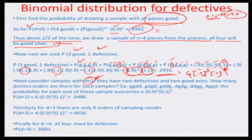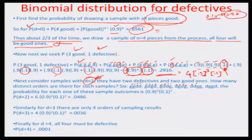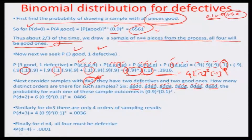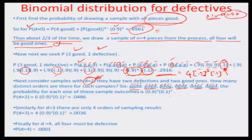Next, consider samples where two of the four draws are defective. There are 6 such combinations — for example, good-good-defective-defective, good-defective-good-defective, good-defective-defective-good, defective-good-good-defective, defective-good-defective-good, and defective-defective-good-good. Putting these outcomes together, we get 6 times 0.9 squared times 0.1 squared, which equals 0.0486.